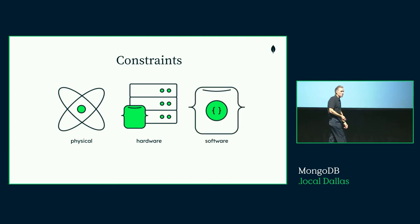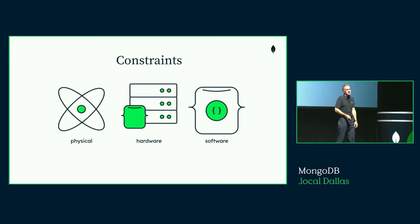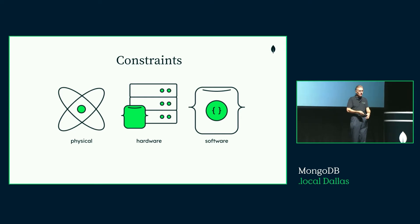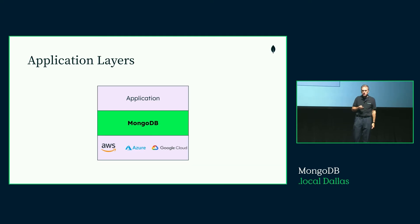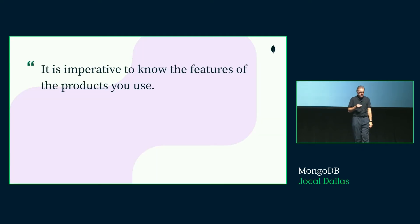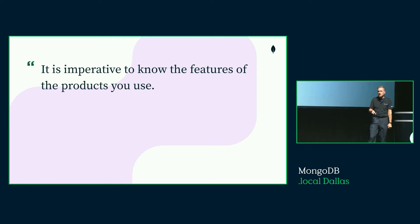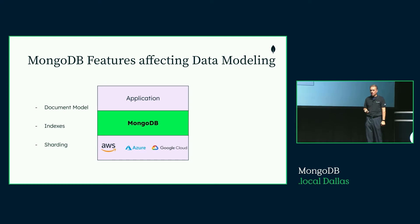You may also have constraints from the software. With MongoDB, there's a maximum document size, and there are features that may not exist right now or that haven't been invented yet. This talk will concentrate on the features of MongoDB that can help you work around those constraints. The key principle is: it is imperative to know the features of the products you use.